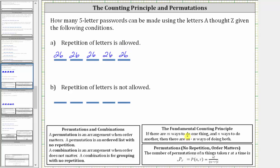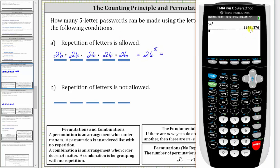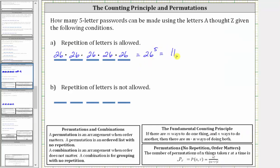Using the counting principle, the total number of passwords is equal to the product of the number of ways. Therefore, the number of passwords possible is equal to 26 times 26 times 26 times 26 times 26, which is equal to 26 raised to the fifth power, which equals 11,881,376. There are 11,881,376 passwords possible when repetition of letters is allowed.